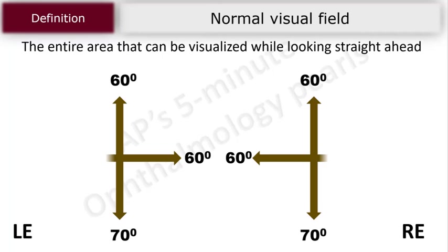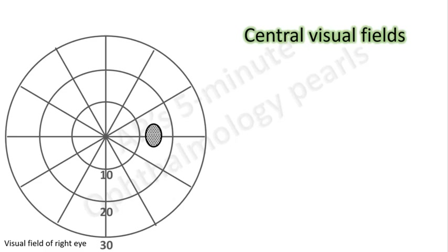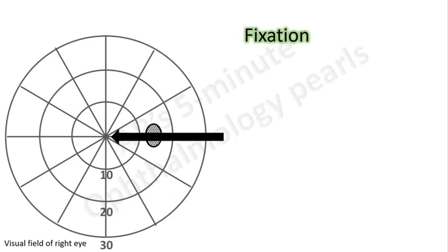The central 30 degree fields are referred to as the central fields. It is here that most of the early changes take place. The point at the center is the fixation point and corresponds to the macula. This is the blind spot. It is a physiological scotoma.